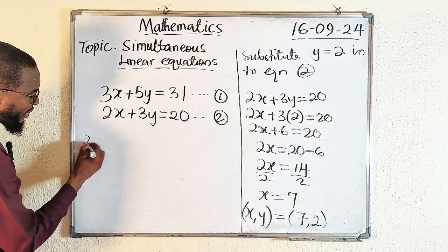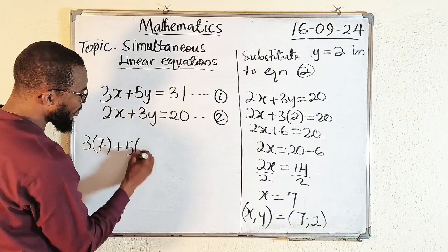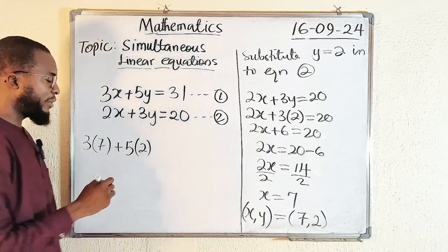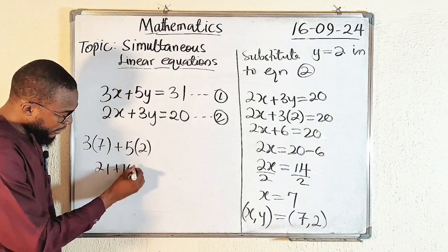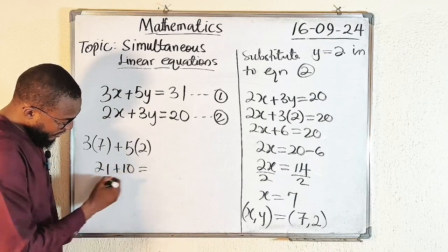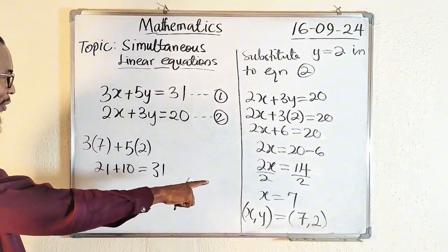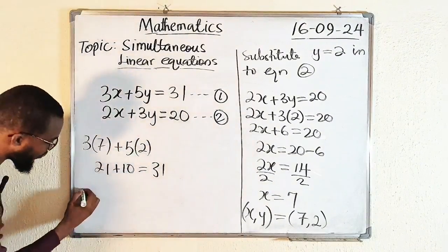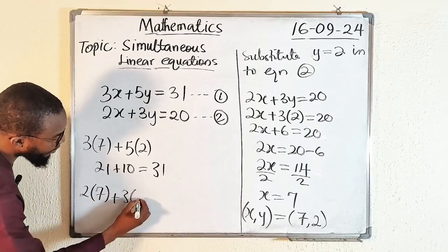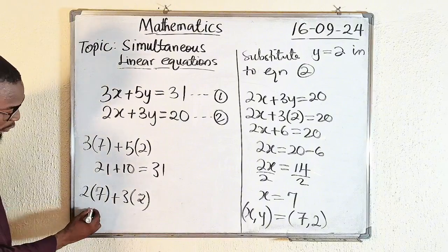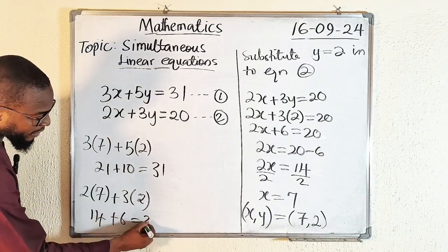Now let's check by substituting x equals 7 and y equals 2 into both equations. For equation one: 3 times 7 is 21, plus 5 times 2 is 10, giving 31 — which confirms it is valid. For equation two: 2 times 7 is 14, plus 3 times 2 is 6, giving 20. So x equals 7 and y equals 2 is indeed the valid solution.